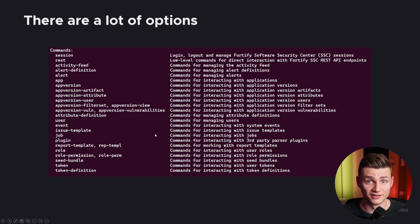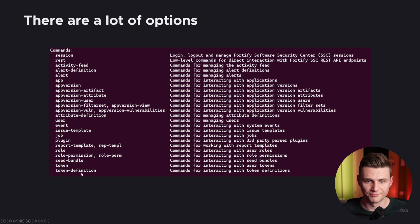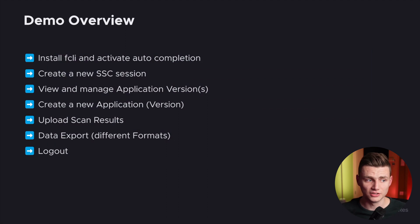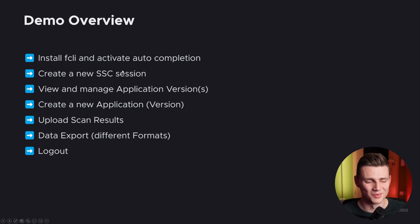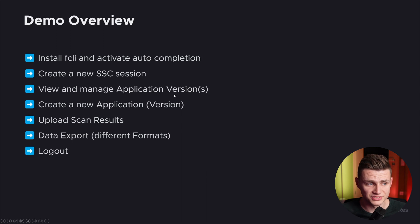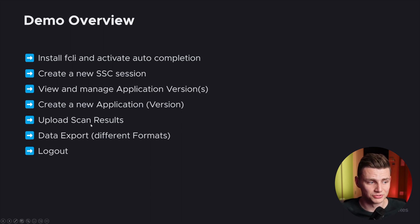When it comes to entities on the SSC side, there are a lot of options — apps, app versions, users, roles, tokens — it's really powerful. To showcase some real use cases, I have a demo prepared. In this demo we'll go through: installing fcli and activating auto-completion, creating a session into SSC, managing applications and application versions, creating a new one, uploading results into it, exporting some data, and finally logging out.